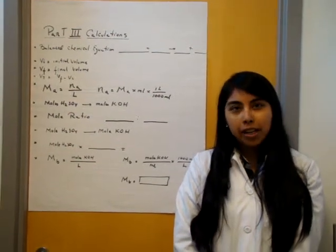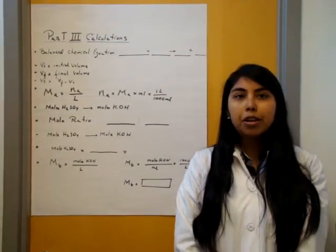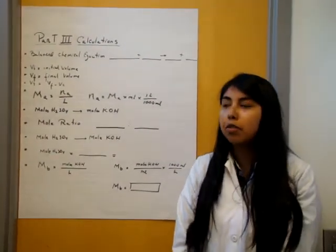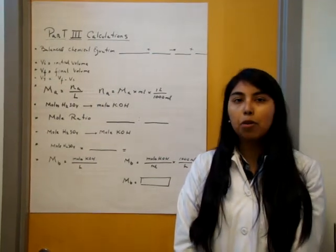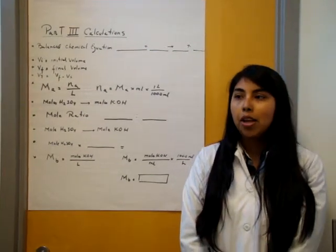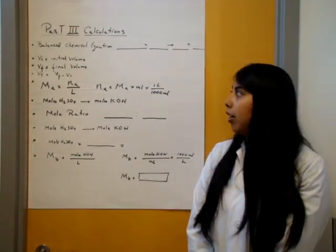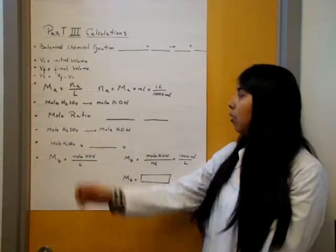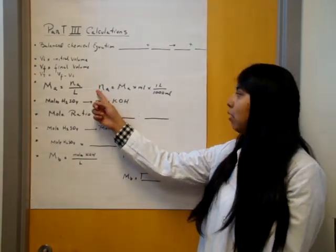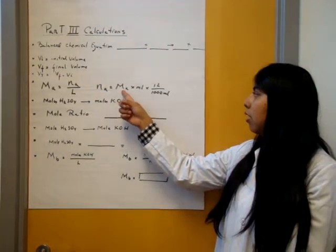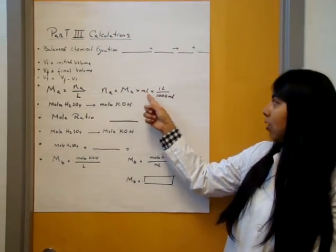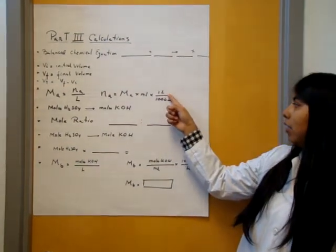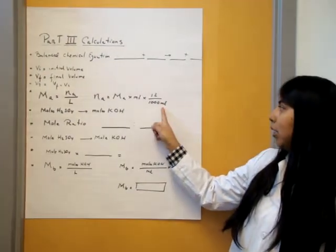This is part of your calculations. You'll start off with a balanced equation, then you'll find your total volume, and then you'll find your moles of the acid, which is molarity of the acid times milliliters times one liter divided by a thousand milliliters.